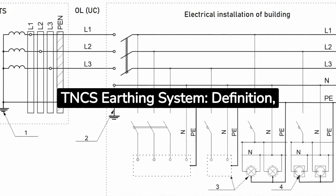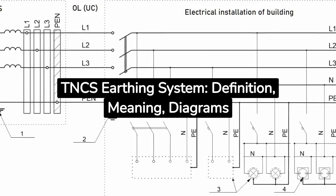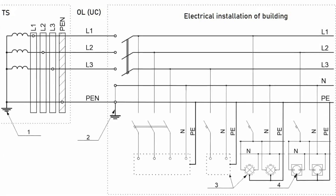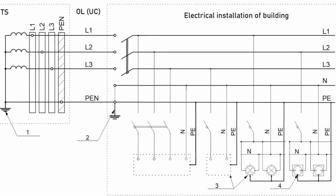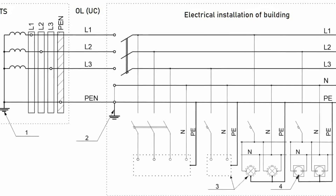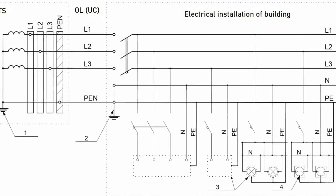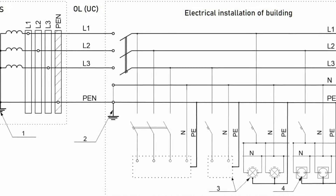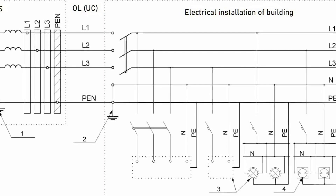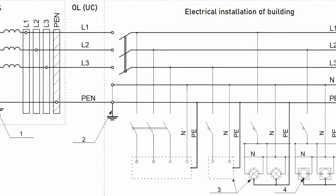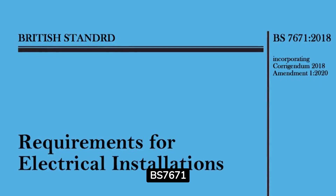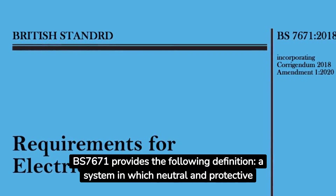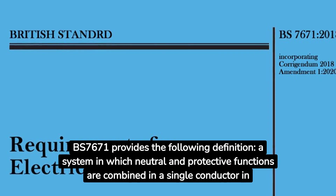TN-C-S earthing system: definition, meaning, and diagrams. The TN-C-S earthing system is a distribution system in which one live part of a power source is earthed. Exposed conductive parts of an electrical installation are connected to the earthed live part of the power source in a head part of the electrical installation by PEN, PEM or PEL conductors, and in other parts by protective earthing conductors (PE). BS 7671 defines it as: a system in which neutral and protective functions are combined in a single conductor in part of the system.